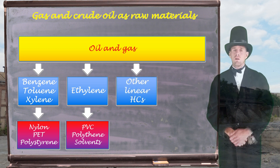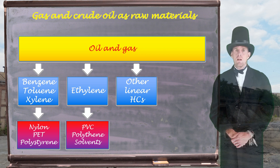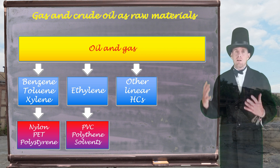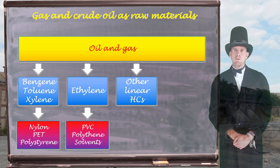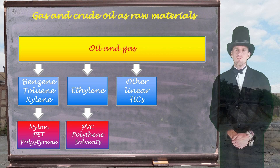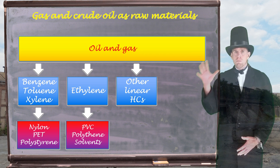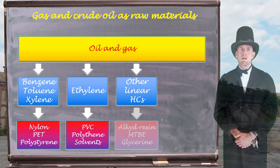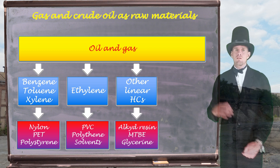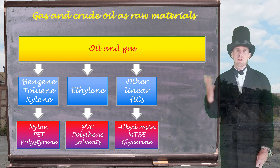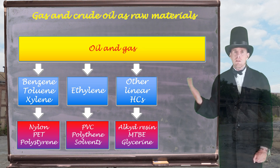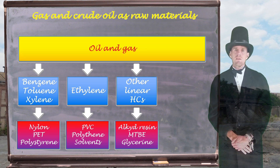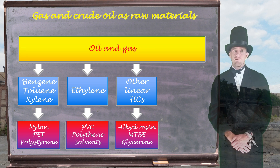Alongside benzene, toluene, xylene, and ethylene, we have groups of other linear hydrocarbons — butanes, butadienes, and so on. There's a whole processing route dedicated to these chemicals that will end up in end products such as alkyd resins, one of the things you find in paints; methyl tertiary butyl ether, which is a petrol additive; and things like glycerin, which is a food additive.